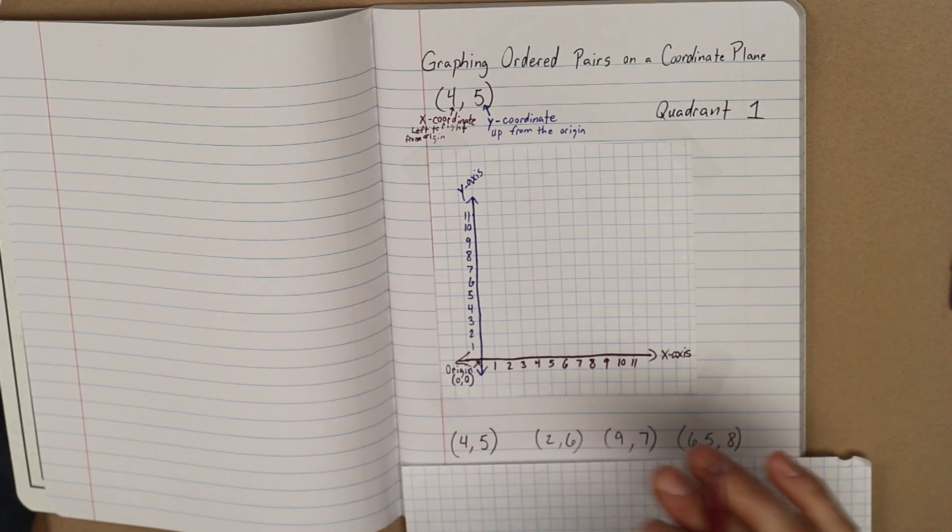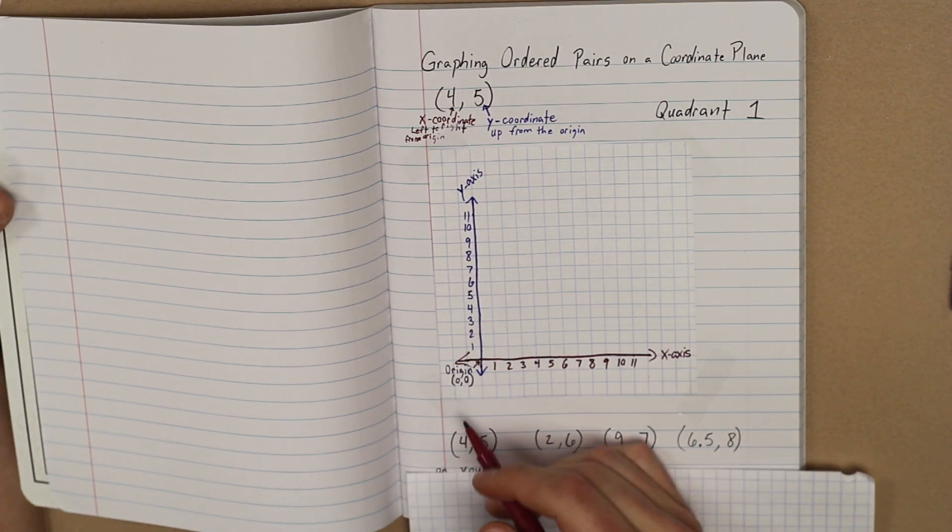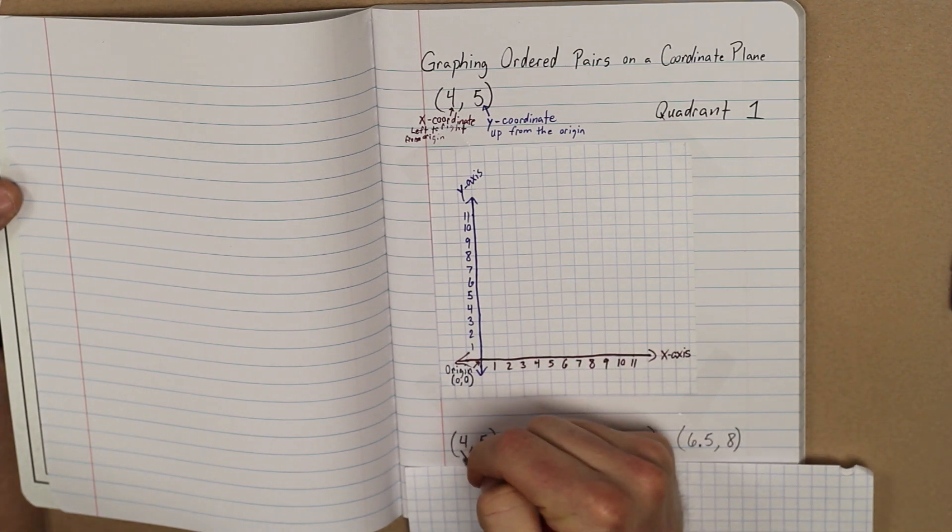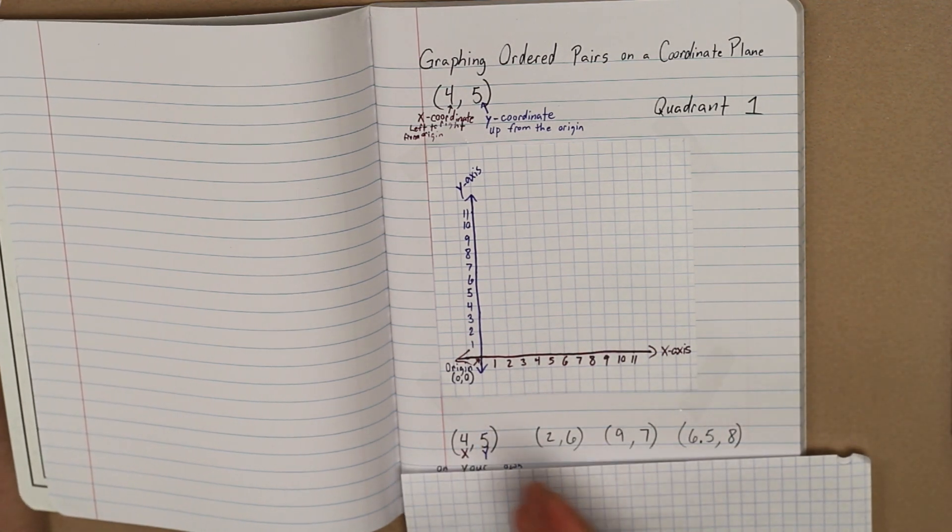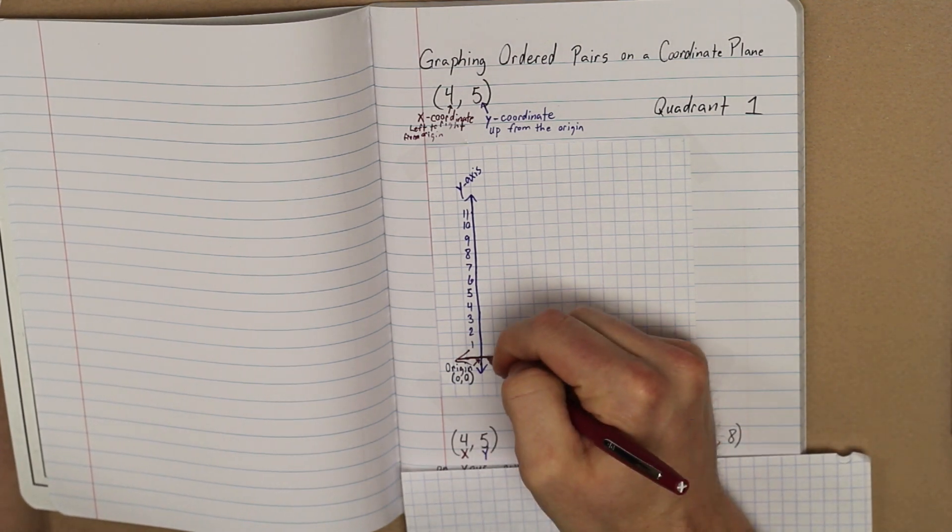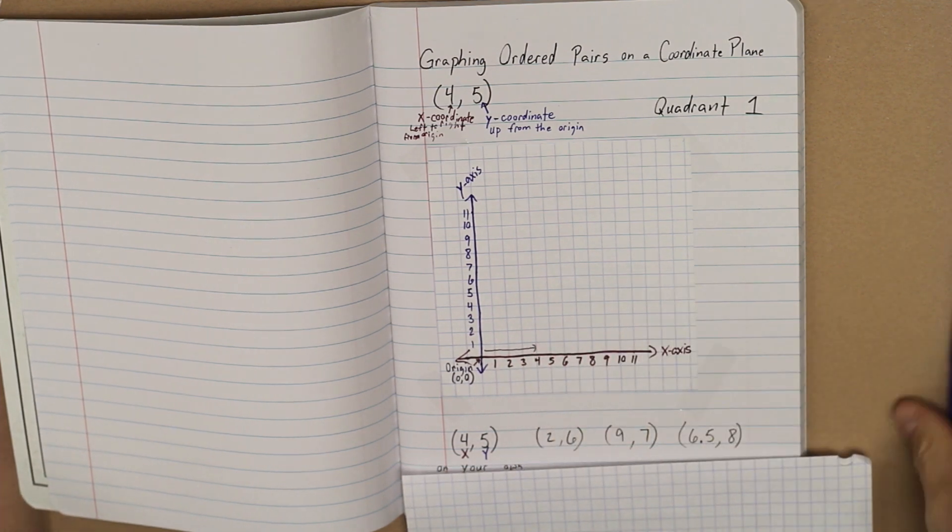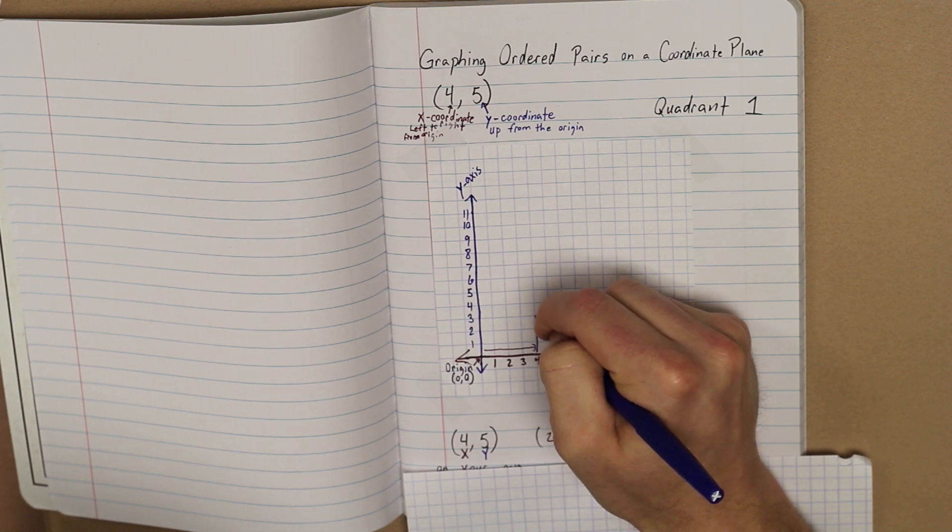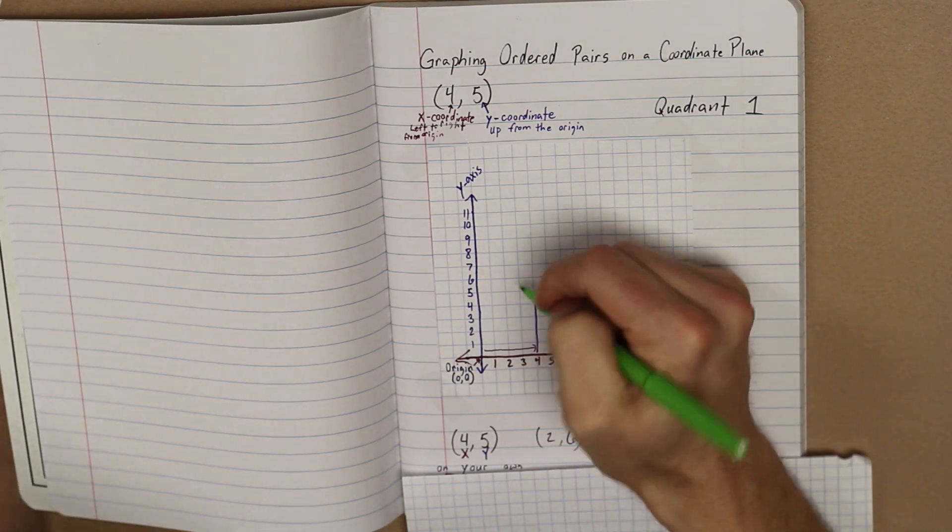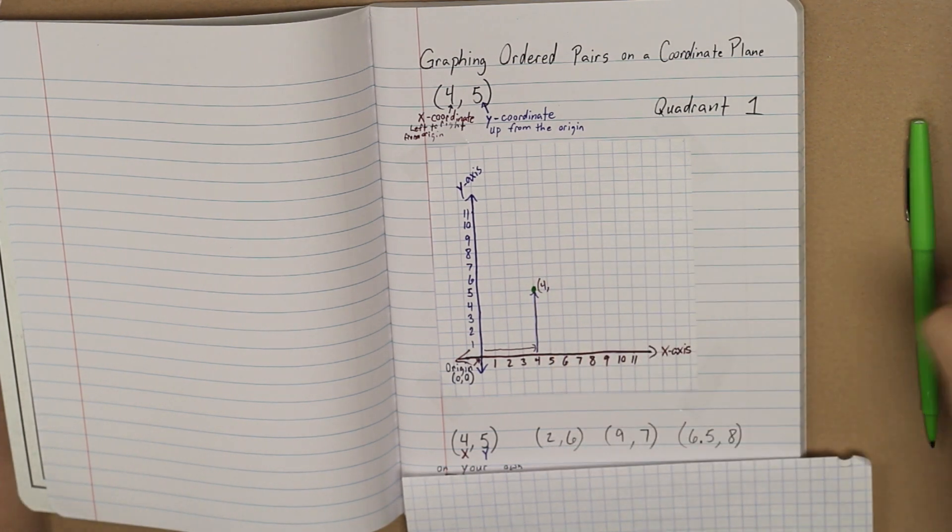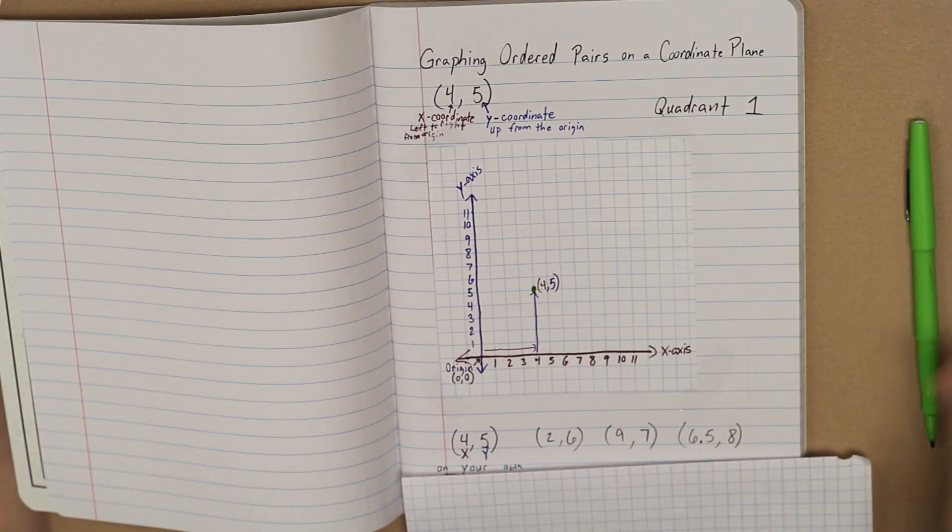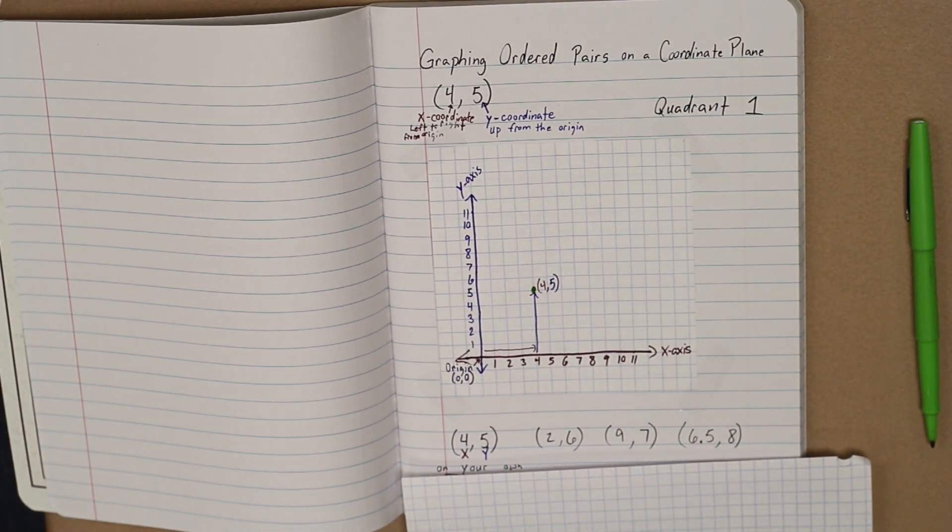For the first one, we have 4, 5. Four is going to be my x, and five is going to be my y. Notice x in the alphabet comes before y, so our coordinate is going to be x, y. For this, I'm going to go over four: one, two, three, four. And I'm going to go up five: one, two, three, four, five. So over four, up five. And then I'm going to put a dot here with my coordinates 4, comma, 5. So now we've plotted a point on a coordinate plane.